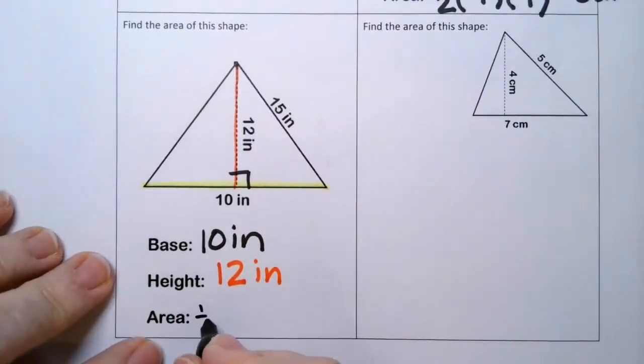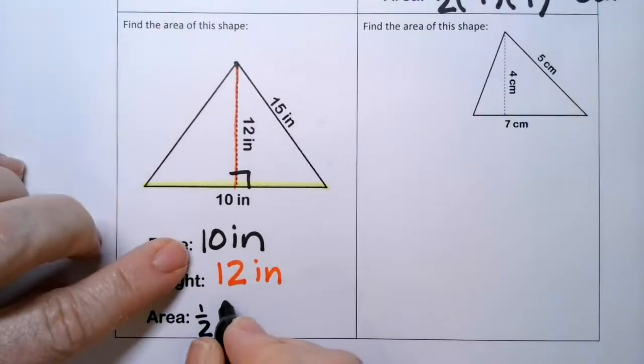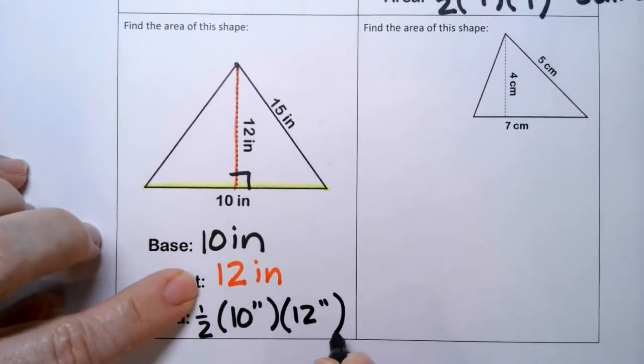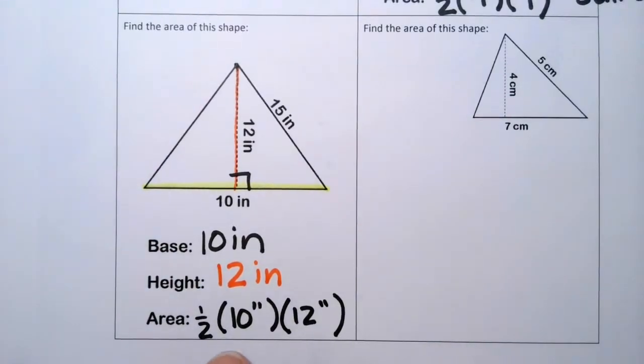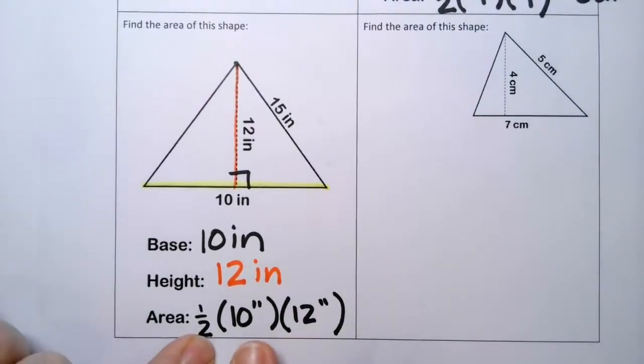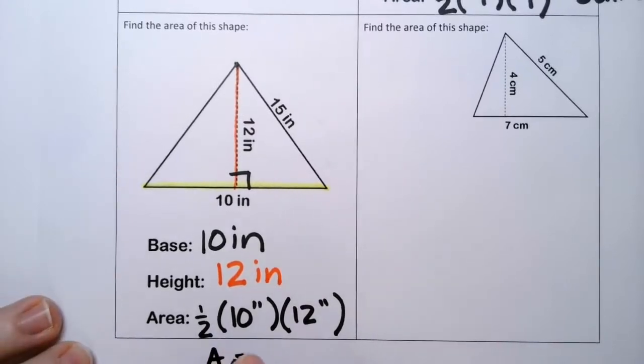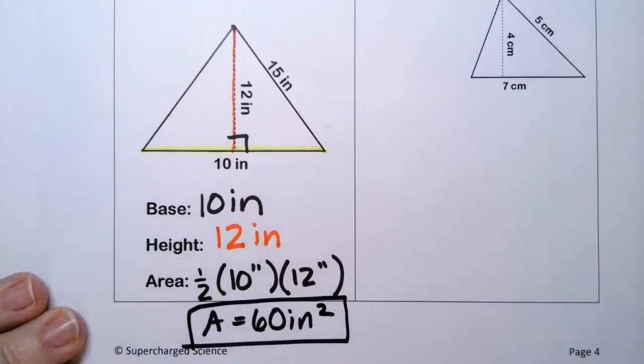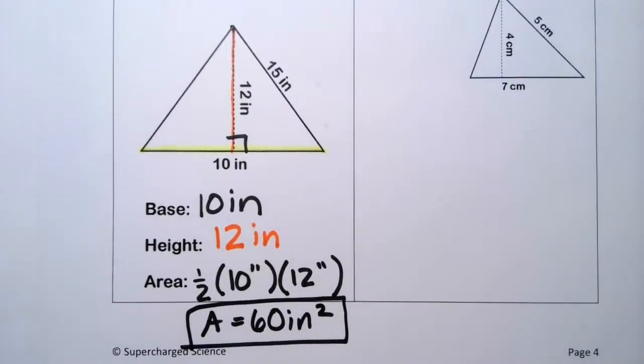Okay. It's the orange line that we want. The orange line is 12 inches. So my area is one-half times the base, which is 10, times the height, which is 12. So half of 12 is 6. 6 times 10 is 60. How are we doing with that?